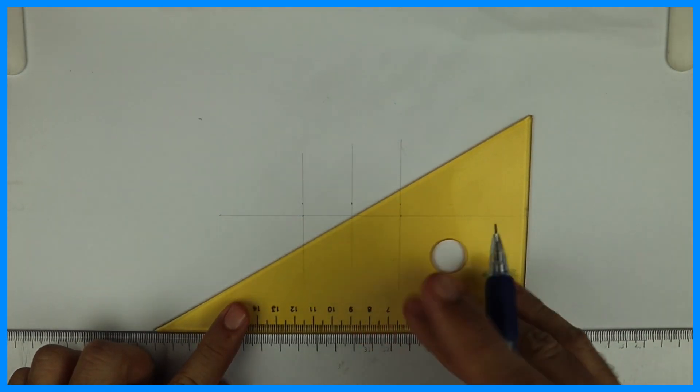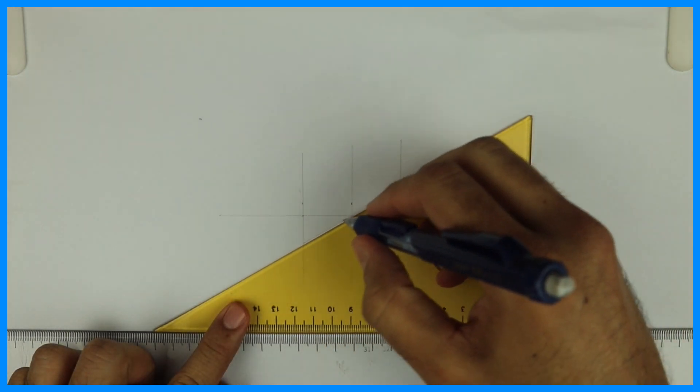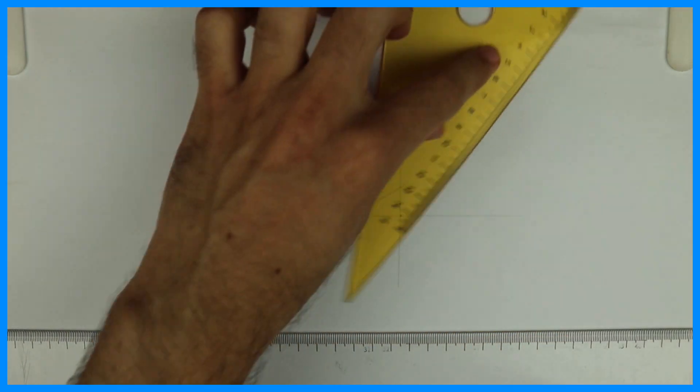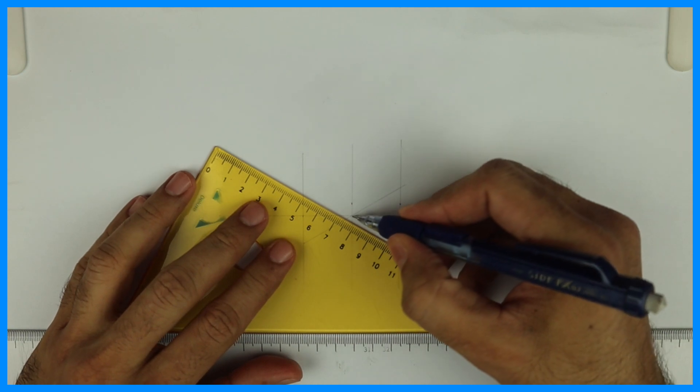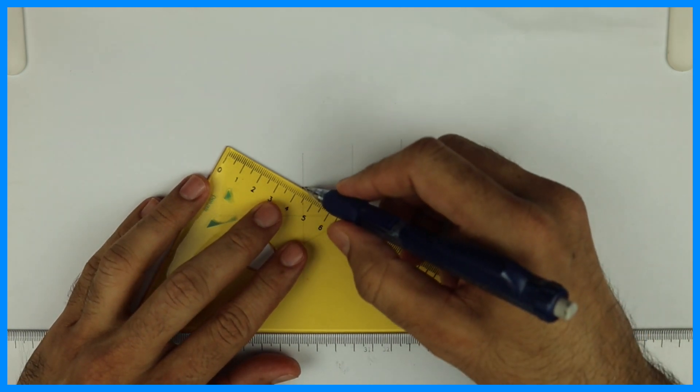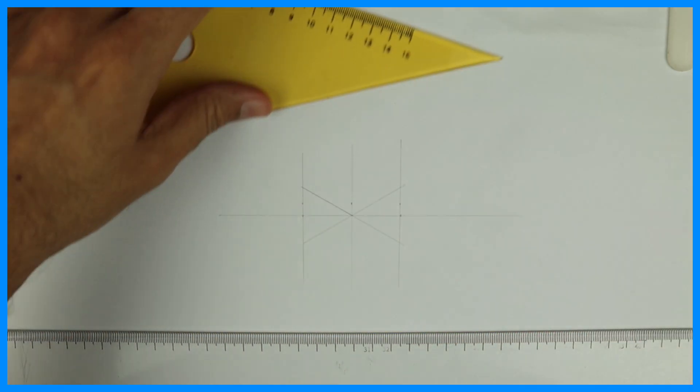Then you take 30 degrees and you draw a line like this passing through the center. Same way, 30 degrees on the other side. So what you will get, you will get the side of the hexagon.